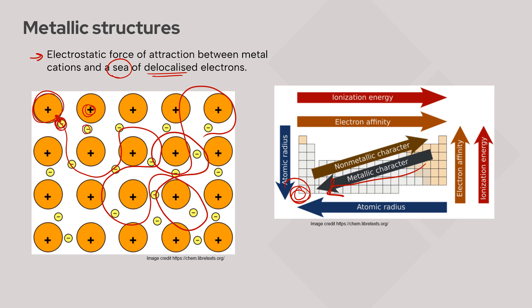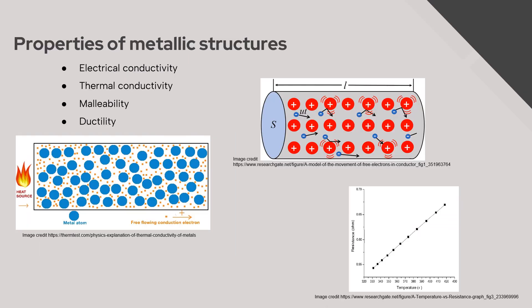The result is that sea of free or delocalized electrons, and there is an electrostatic force of attraction between those positively charged metal cations and the negatively charged sea of free electrons. This sea of delocalized electrons in metallic structures leads to a lot of super cool properties. One of those properties is electrical conductivity — the conductivity of electricity depends on the ability for charged particles, ions or electrons, to move. With free electrons, we can give them a push and get them to flow, and that flow of electrons is electrical conductivity.